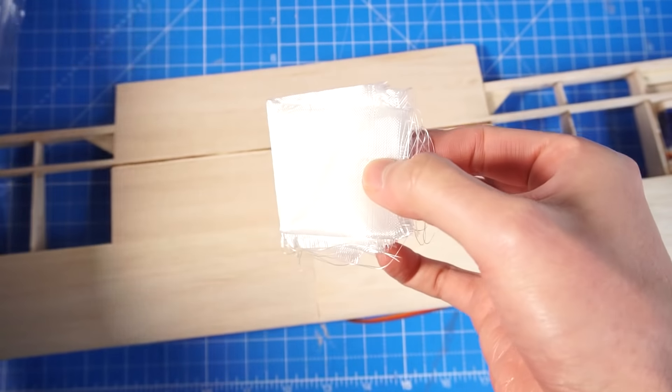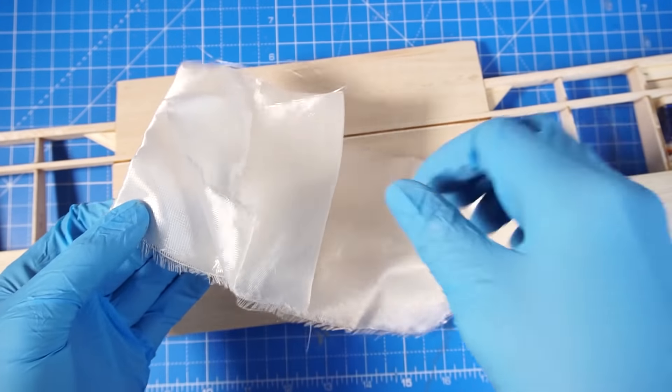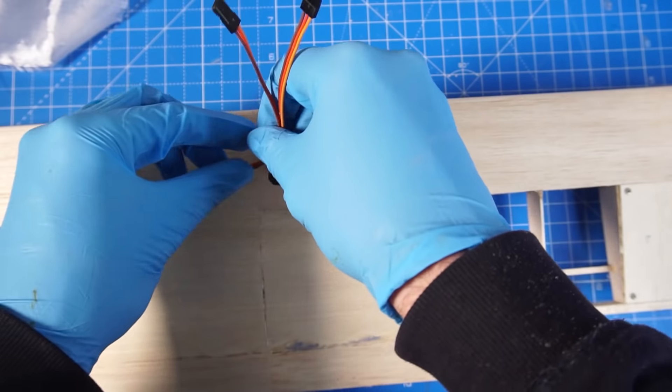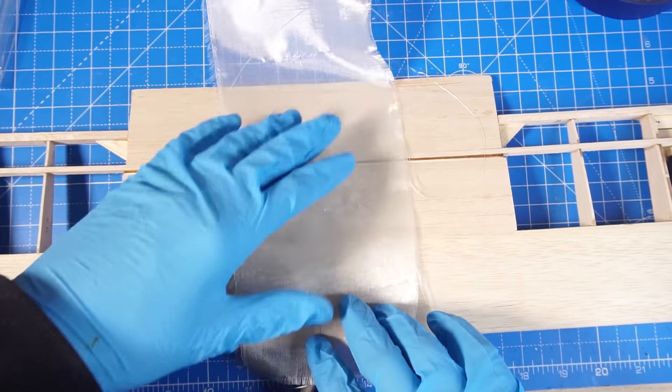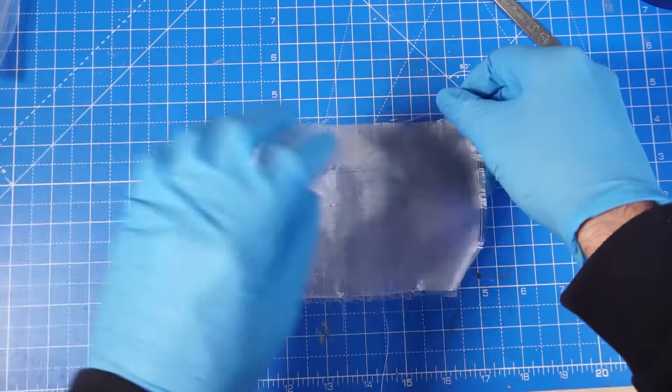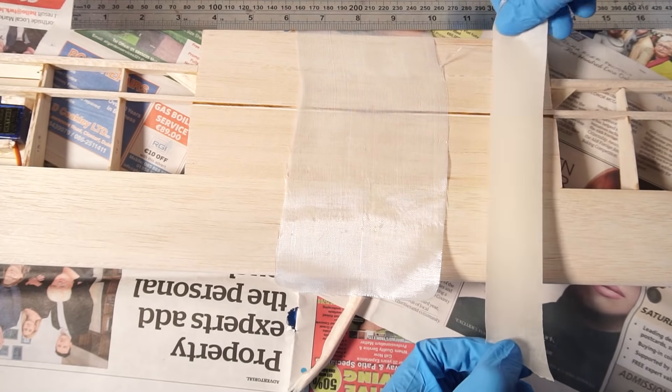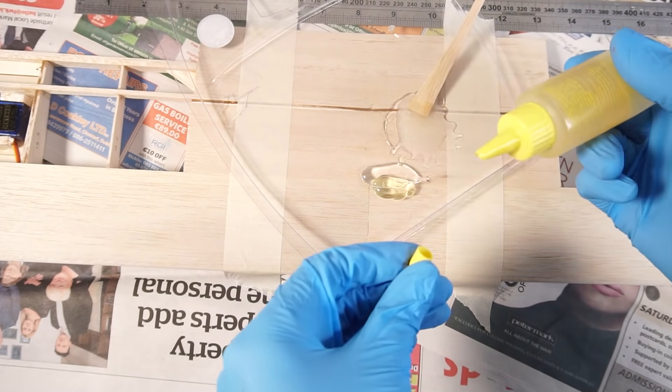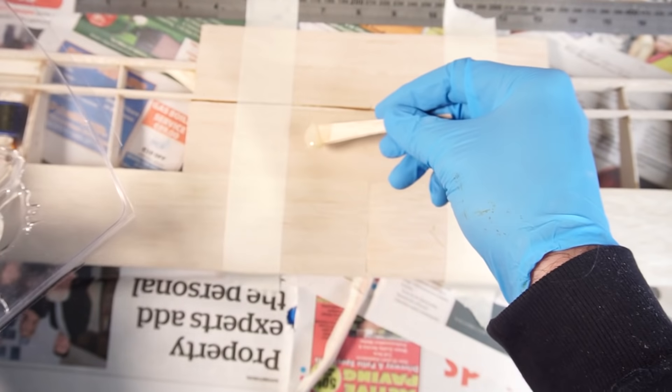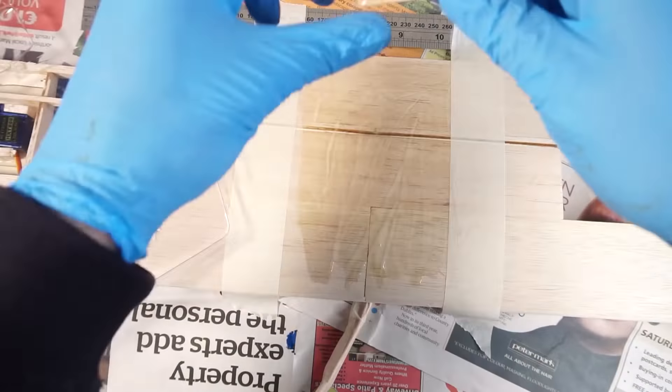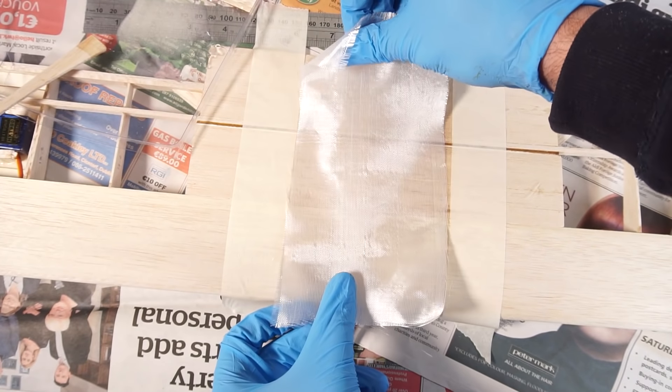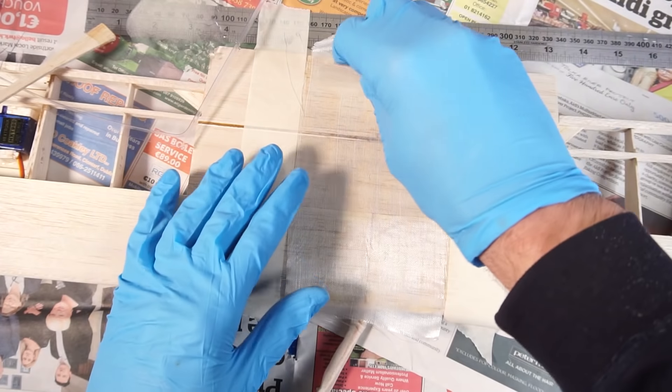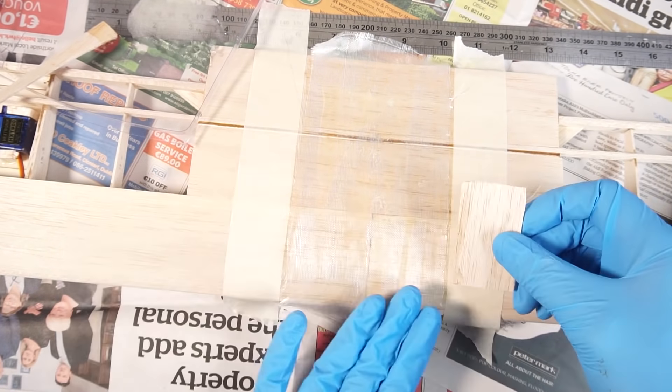And now we're going to reinforce the mid section of the wing with some fiberglass. The fiberglass cloth is included in the kit but you'll need some epoxy, I'm going to use the same one I used to glue the landing gear in place. I also recommend using some surgical gloves to avoid discomfort while working with fiberglass. Working with fiberglass is actually very straightforward as you can see in the images. This adds a lot more strength to the wing. You can skip this step but I recommend using the fiberglass.